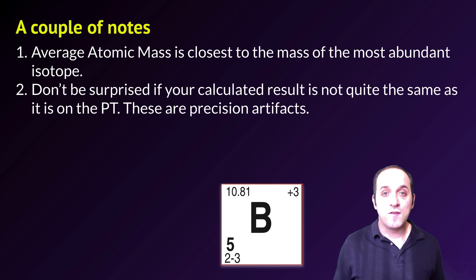The second point that I'll make here is that you should not at all be surprised if your calculated result is not quite the same as it is in the periodic table. These are basically what we call precision artifacts. If I give you data to a certain decimal place, you may not be quite as precise as the data that was used to form our periodic table. We see this in our boron example because this boron is reported to the hundredth place in terms of its precision, whereas our overall answer could only be calculated out to the tenths place with any significant precision.